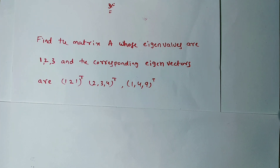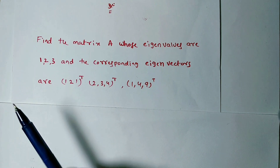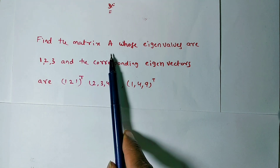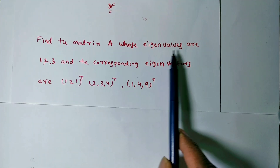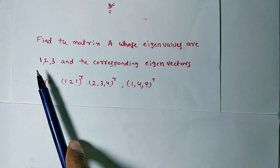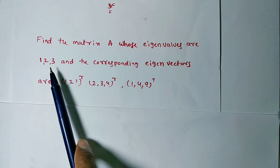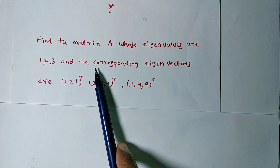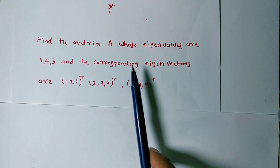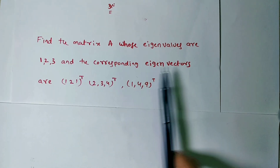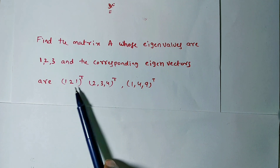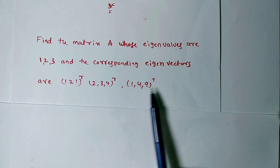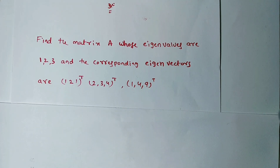The given problem is: find the matrix A whose eigenvalues are 1, 2, and 3 with the corresponding eigenvectors x1 = [1, 2, 1] transpose, x2 = [2, 3, 4] transpose, and x3 = [1, 4, 9] transpose.